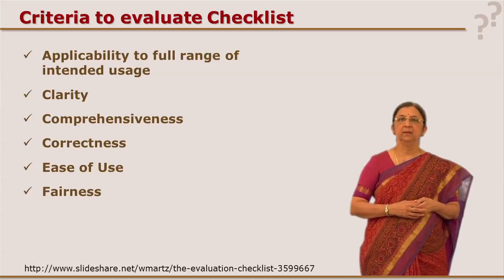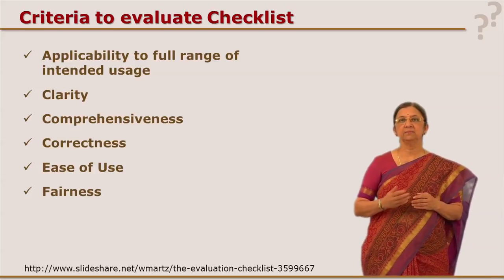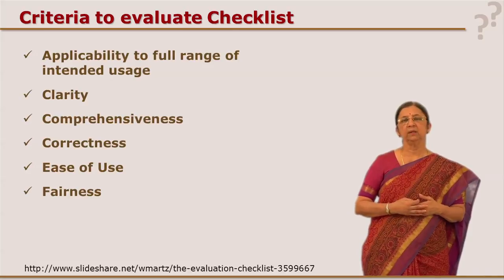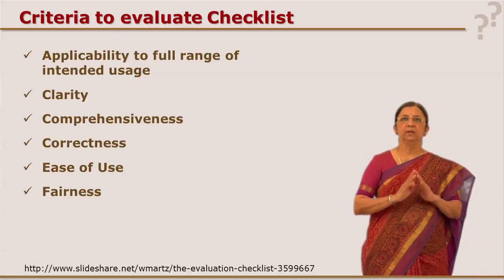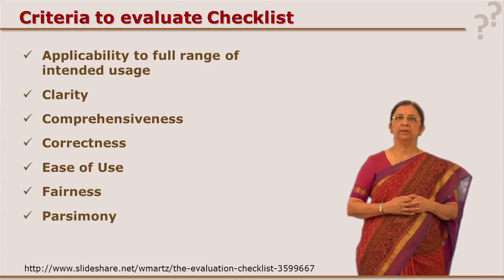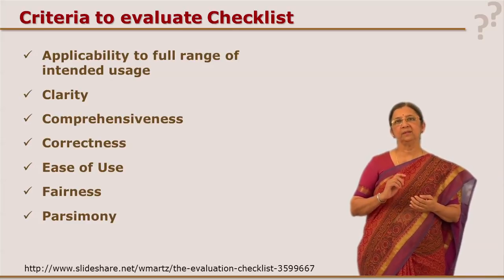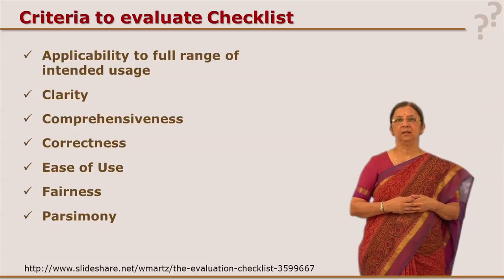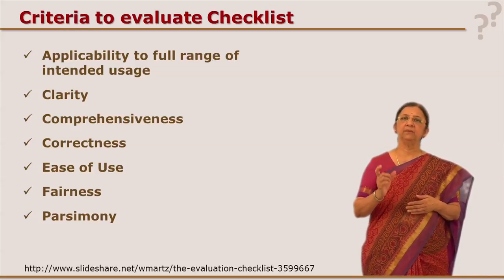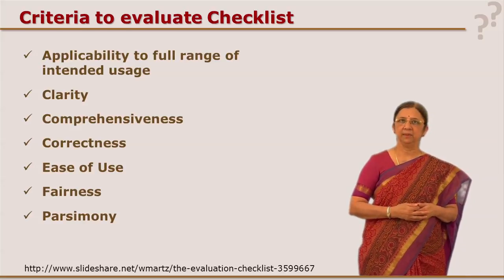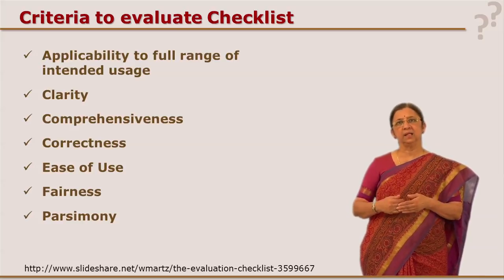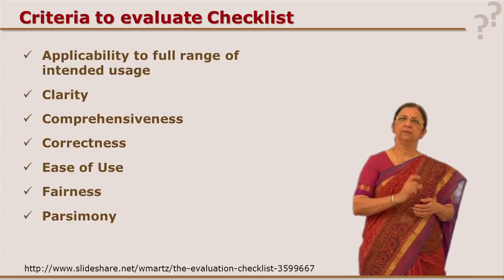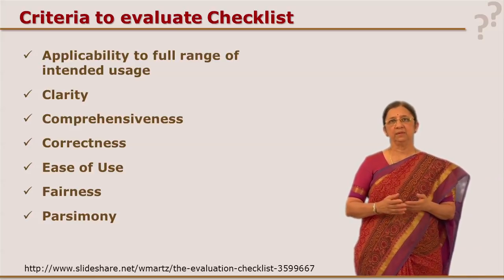Another criterion for evaluating a checklist is its fairness — we should not bring the researcher's bias into any tool, so it should be fair to everyone who is answering or observing. Parsimony or economy is also very important: economic in time, in use, in words. If a statement can be made in 5 words, you should not make it 10 words. If it can be done in 30 items, you should not go for 45 or 90 items.